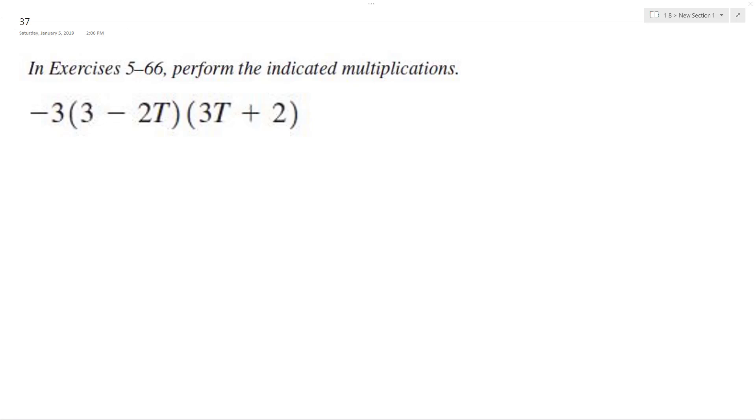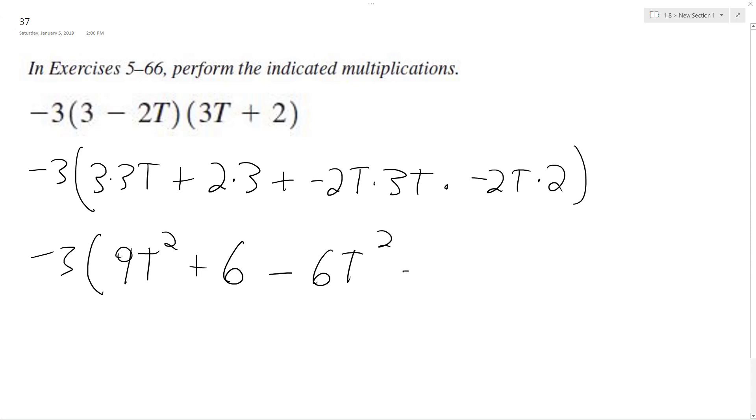Let's solve the following problem. First off, we're going to FOIL here. So it's going to be negative 3 times 3T plus 2 times 3 plus negative 2T times 3T times negative 2T times 2. Negative 3 times 9T squared plus 6 minus 6T squared minus 4T.